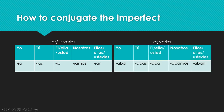For AR verbs, the endings look like -ABA most of the time. The YO and the EL, ELLA, USTED forms are exactly the same — they all take -ABA. For NOSOTROS, the ending is -ÁBAMOS. Make sure you're noticing the accent mark there — it's one of the exceptions that jumps out at you.